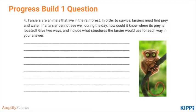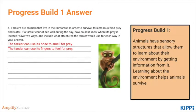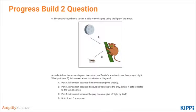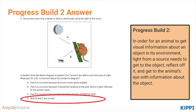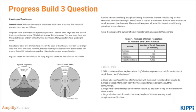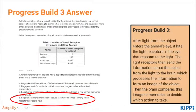On to the end of unit assessment. The first question assesses Progress Build 1 — students are simply identifying structures that are used for sensing. The second question assesses Progress Build 2 about the path of light to a predator. The third question assesses Progress Build 3, comparing dog and rabbit vision, and includes a short reading and a table with data. The correct answer for this one is D — dogs can sense better because they have more receptors.